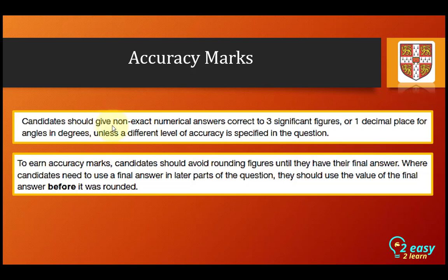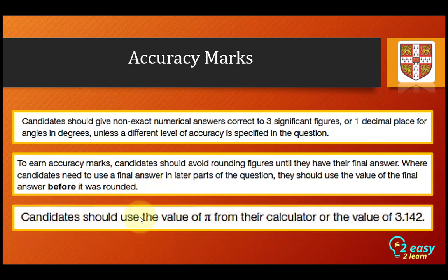Regarding accuracy marks, candidates should give non-exact numerical answers correct to three significant figures, or one decimal place for angles in degrees, unless a different level of accuracy is specified in the question. To earn accuracy marks, candidates should avoid rounding figures until they have their final answer. Where candidates need to use a final answer in later parts of the question, they should use the value before it was rounded. Candidates should use the value of pi from the calculator or the value 3.142.